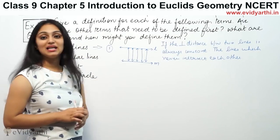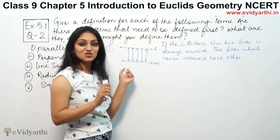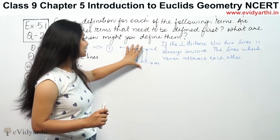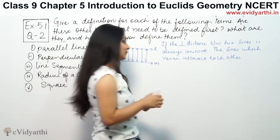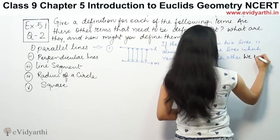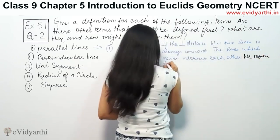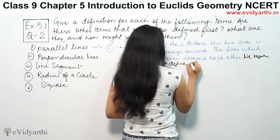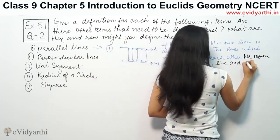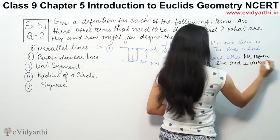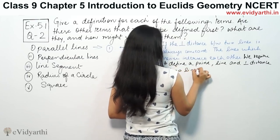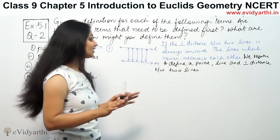So parallel lines never intersect each other. To properly define parallel lines, we first need to know about points and lines. What is a point? What is a line? What is the perpendicular distance between lines? We require to define a point, a line, and the perpendicular distance between two lines.